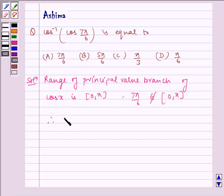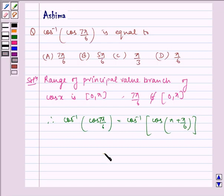Therefore, cos inverse of cos of 7π by 6 is equal to cos inverse of cos of π plus π by 6, which is equal to cos inverse of minus cos of π by 6.